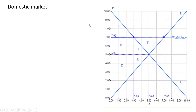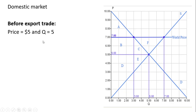Here we're going to look at the domestic market. We have a demand curve and a supply curve for the good, and we're going to look at what's happening before we allow export trade. The equilibrium price is $5 and the equilibrium quantity is 5 units. So domestic consumers pay $5 and buy five units.